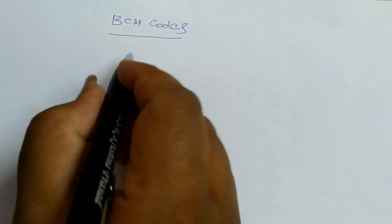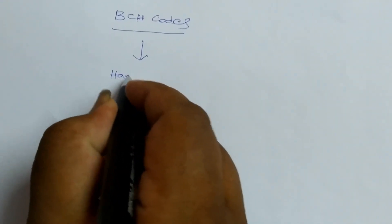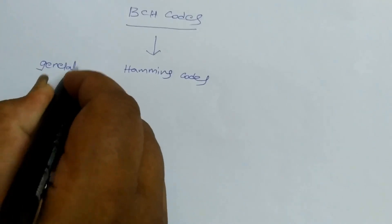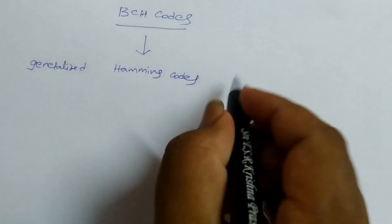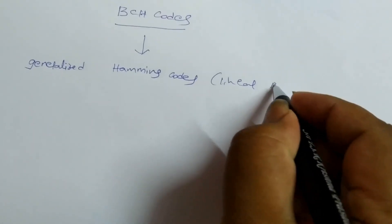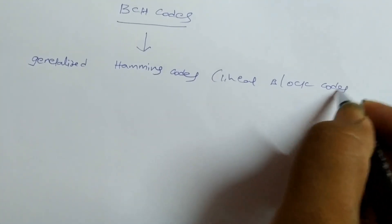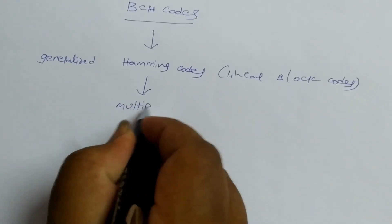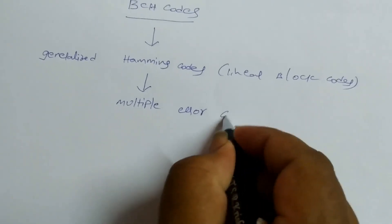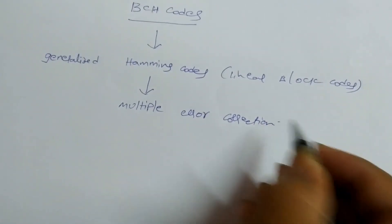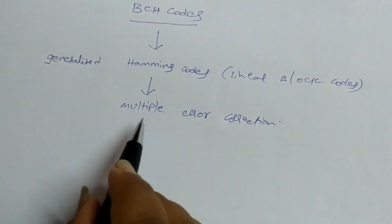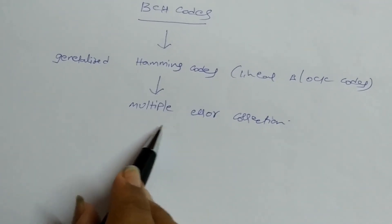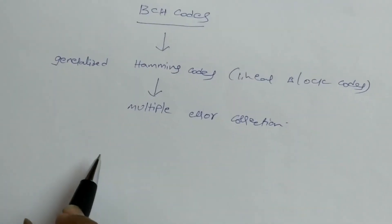BCH codes are actually an extension to the Hamming codes, and are mostly called generalized Hamming codes. While Hamming codes are linear block codes, the main motivation for BCH codes is multiple error correction — while transmitting information, if there are multiple errors, BCH codes can detect and correct them. That is the main advantage of BCH codes.